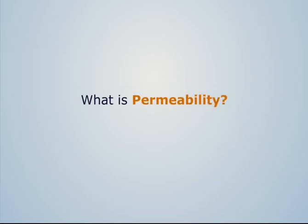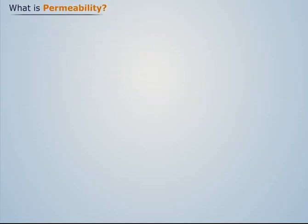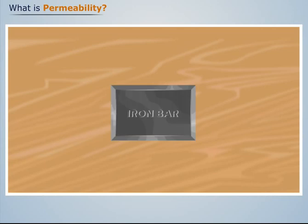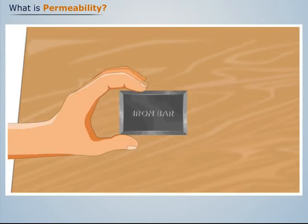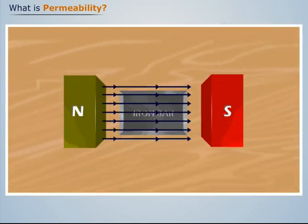What is permeability? Let's consider a bar of a magnetic material, say iron. Let's place this bar in a uniform field of strength H.